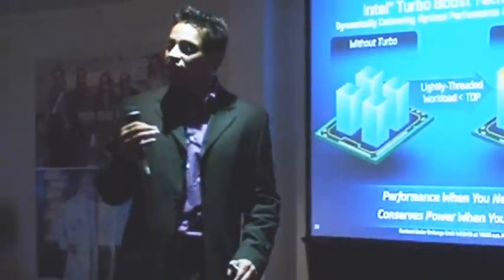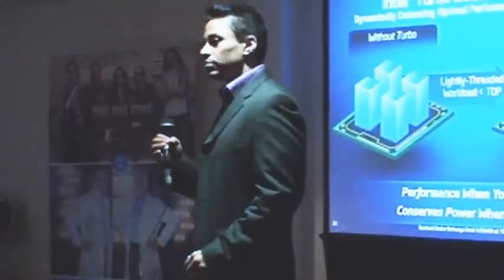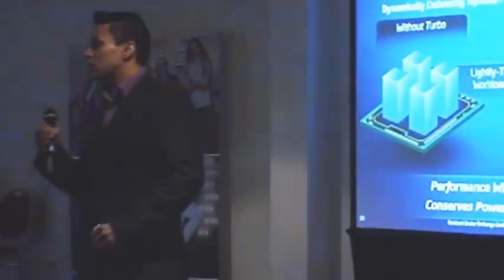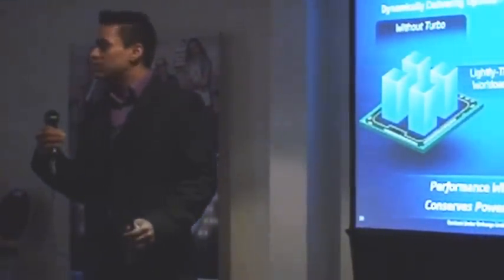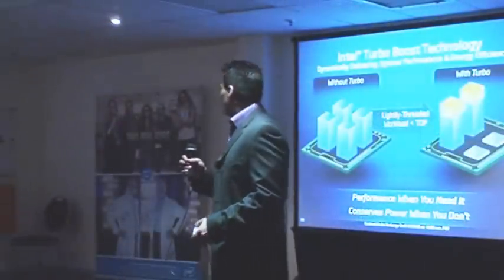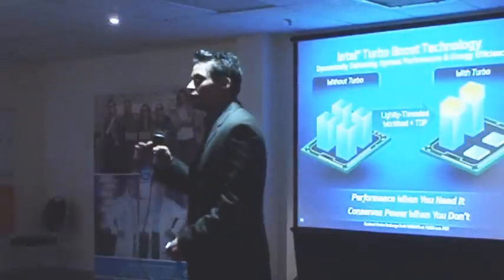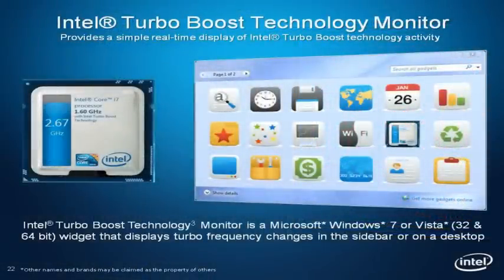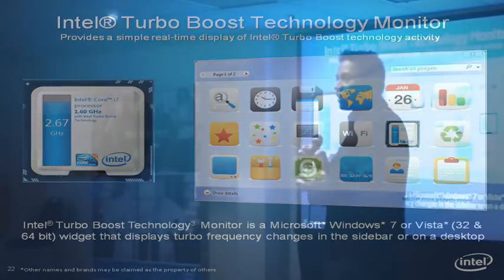Most of us type documents, browse the internet, play games occasionally, and edit or view photos from family. Turbo allows even a 2 GHz consumer PC to handle those tasks with the performance needed. In Windows 7 and Windows Vista, both 32 and 64-bit, there's a widget available that lets you view the performance of your cores and see turbo in real time.